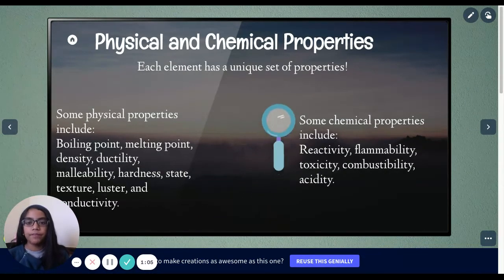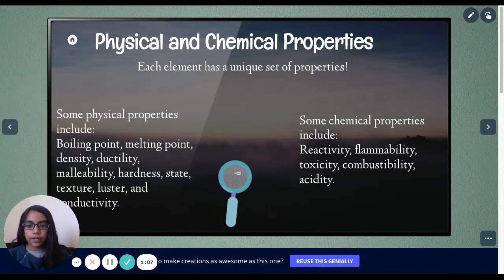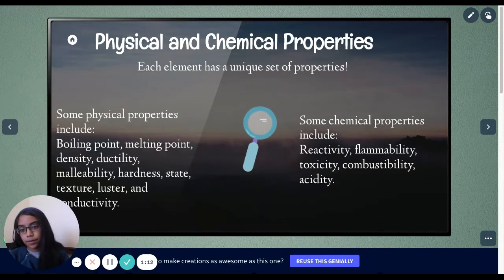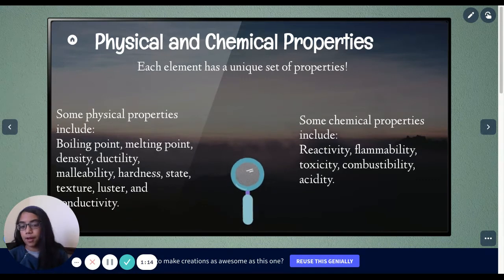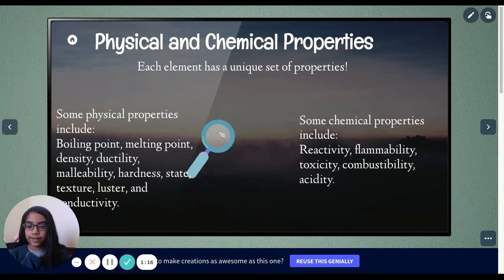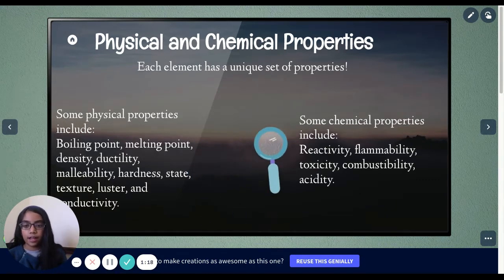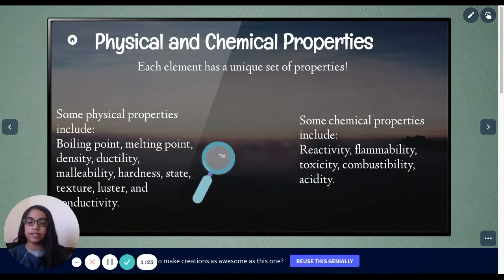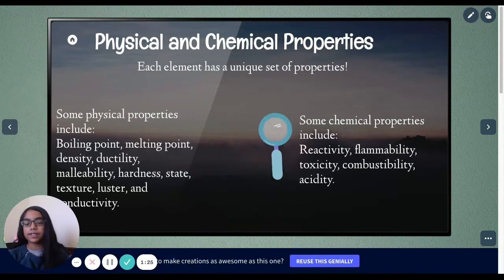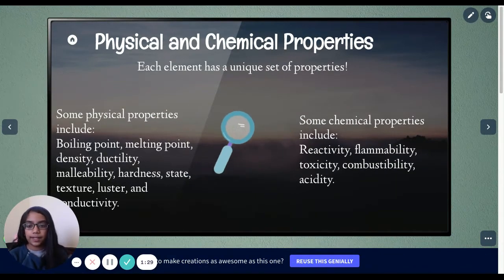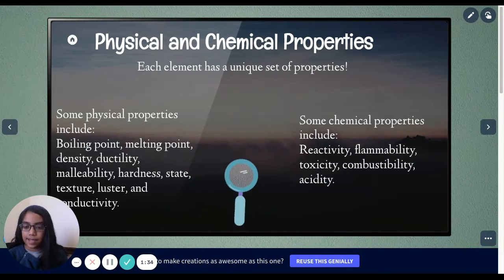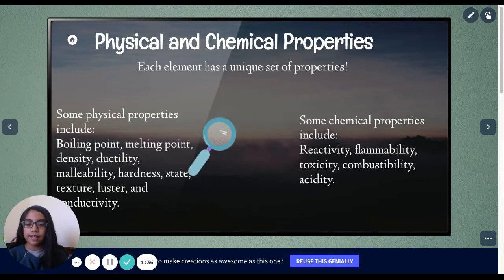Now properties. Physical and chemical properties. Each element has a unique set of properties. Some physical properties include boiling point and melting point, which is the point where an element boils or melts. Density, which is mass divided by volume. Ductility, which is the ability to be stretched out into a wire. Malleability, the ability to be mashed. And hardness, state, texture, luster, and conductivity.